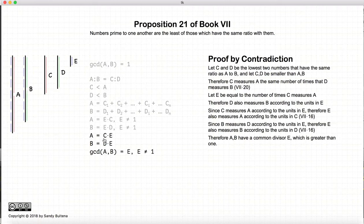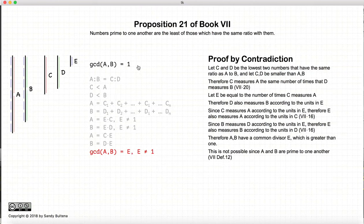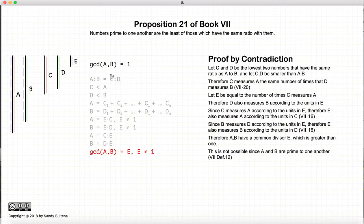Since e measures a and e also measures b, then the greatest common divisor of a and b will be equal to e. And e is not equal to 1. However, we started this whole proof by stating that the greatest common divisor of a and b was equal to 1. So we have a contradiction, and since we have this contradiction, there cannot be numbers c and d with the same ratio as a to b where c is less than a and d is less than b. So c and d do not exist.